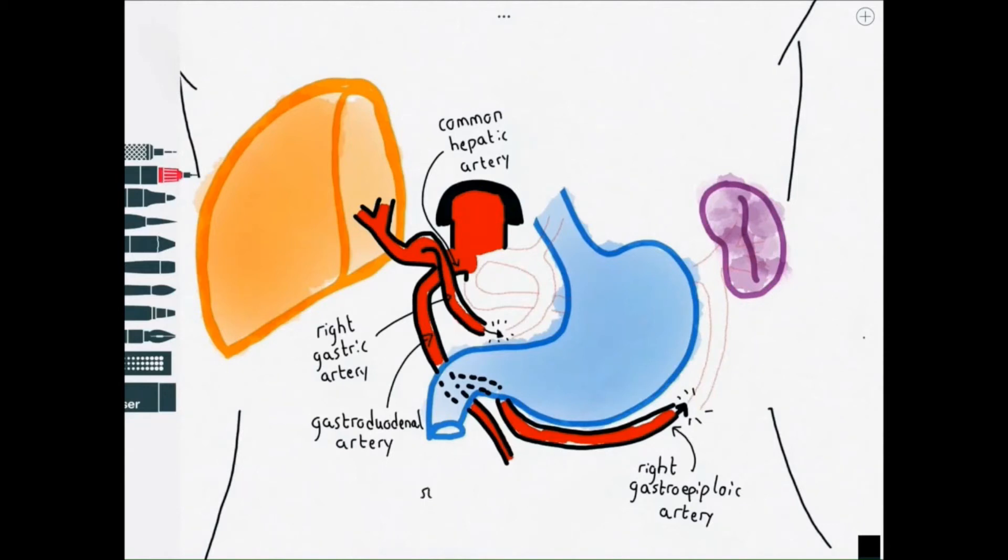We also get the superior pancreatic duodenal artery which supplies the proximal duodenum and the superior part of the head of the pancreas.